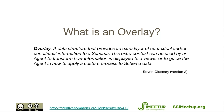This extra context can be used by an agent to transform how information is displayed to a viewer or to guide the agent in how to apply a custom process to schema data. The architecture we're building keeps the schema in its most basic form, and any additional coloration, information, or conditional pieces can be overlaid on top of that schema.